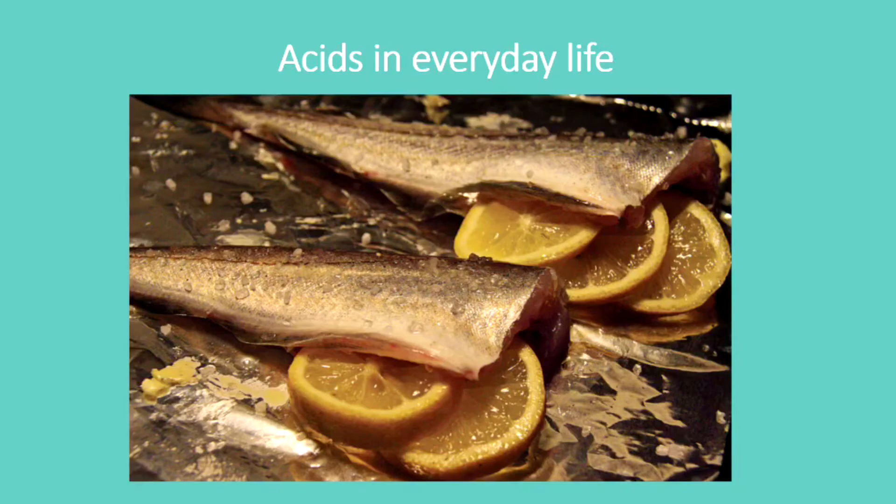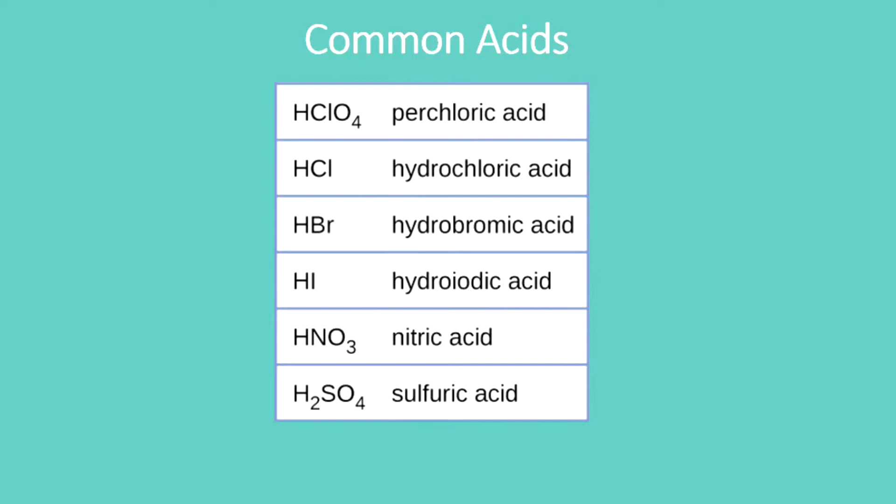As we've mentioned, acids are all around us and here we see a slice of lemon being used to prepare fish. That lemon contains citric acid and it reacts with a base inside the fish to begin to prepare it for cooking. So acids are all around us and if we look in a chemistry textbook we'll see that acids typically have formulas like this. Here we see HClO4 and we notice that's called perchloric acid. So the names always end in acid and that makes it pretty easy to know if you have an acid when you have the name written out.